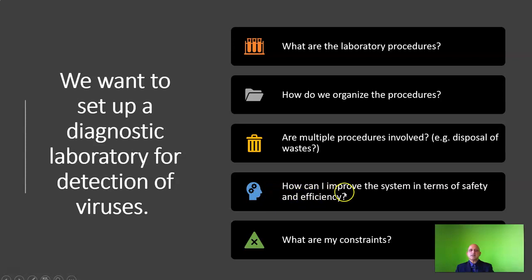The next question is: how can I improve the system in terms of safety and efficiency? As a Bio-Risk Manager, you will note that during the operation of your system you will encounter what are known as accidents and incidents. Accidents and incidents are an indication of some gap in your operational guidelines. These need to be addressed before they can end up as serious incidents or accidents, and this forms the basis for continuous quality improvement.